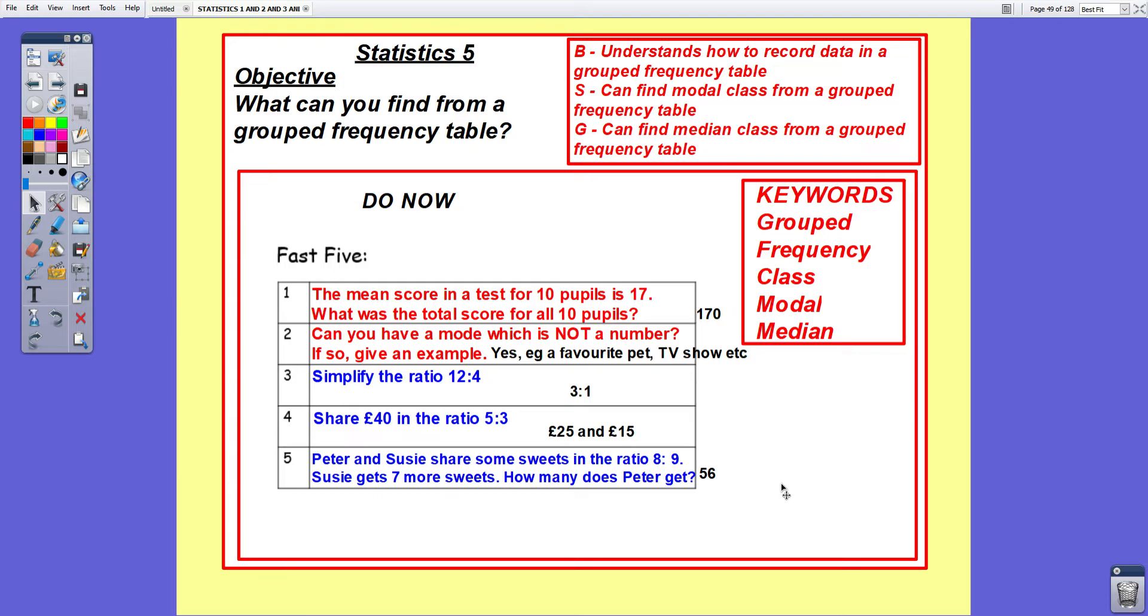Question two: can you have a mode which is not a number? If so give an example. Well yes you can have a mode that is not a number. For instance if you asked a class to name their favorite pets and most people like dog then dog would be the mode. If most people like Coronation Street then Coronation Street would be the mode.